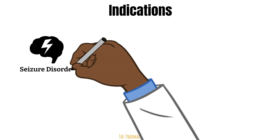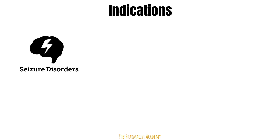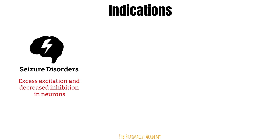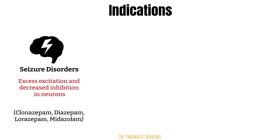This mechanism is the reason benzos are used for the following indications. First, seizure disorders, including status epilepticus. In patients with seizure disorders, there is an imbalance between excitatory and inhibitory neurons, leading to abnormal electrical activity which can cause seizures. We give benzos to potentiate the effect of inhibitory neurons to fix this imbalance. Benzos have a fast onset, good efficacy, and can be administered by different routes, making them first-line agents for status epilepticus, which is a neurological emergency.